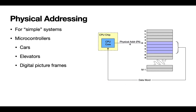Very straightforward. The address the CPU puts out is a reference to the physical storage on the machine, so we call this a physical address, or PA. This is quite simple — really a strategy only used in things like microcontrollers found in an elevator or a microwave oven, and not used anymore in more sophisticated computer systems.